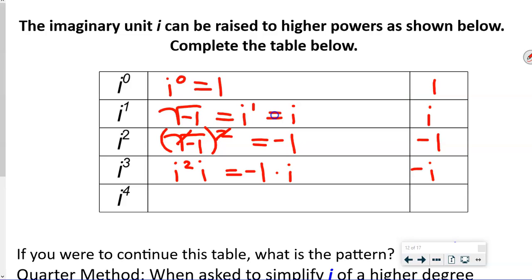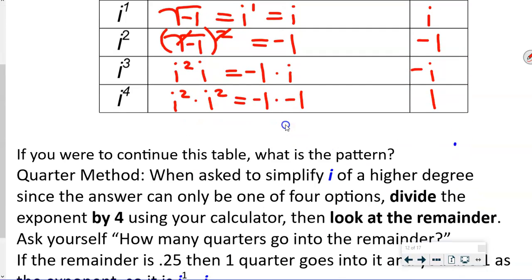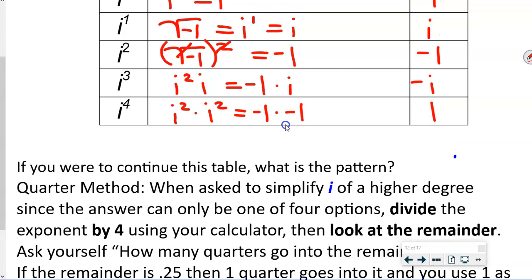i to the fourth is i squared times i squared, which is negative 1 times negative 1, giving positive 1. The pattern then repeats. The pattern is: 1, i, negative 1, negative i — and it just keeps cycling.